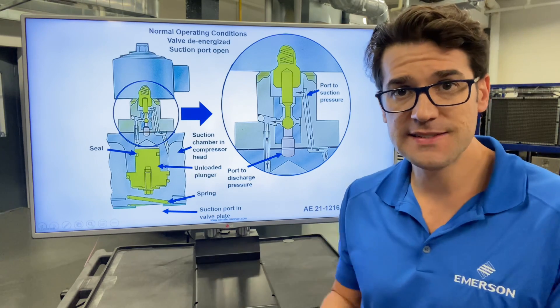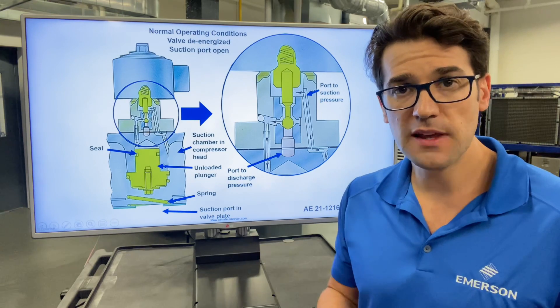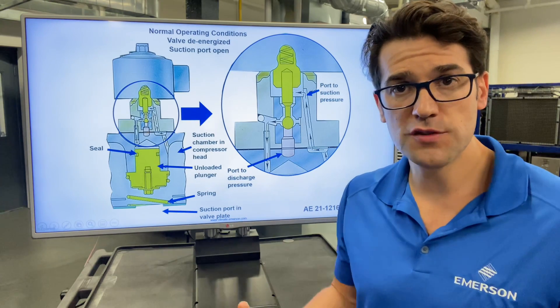On our 4D and 6D compressors, we have something called unloaders, block suction unloaders. What they do is they block the suction so there's no compression happening.